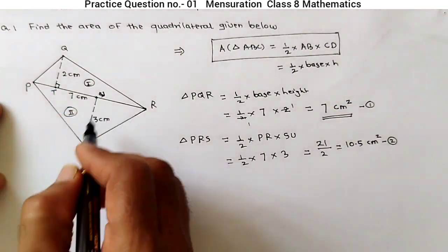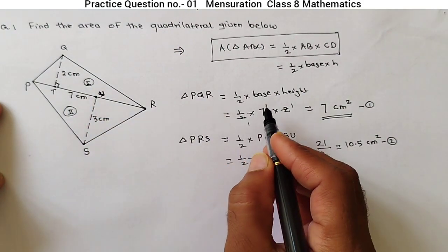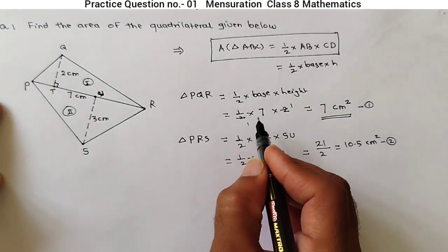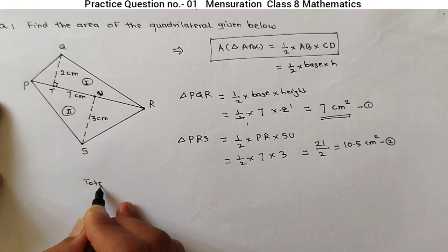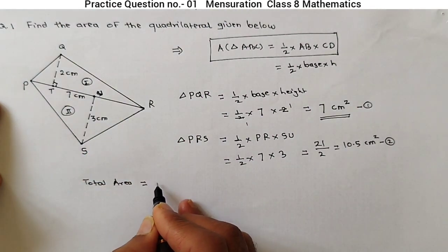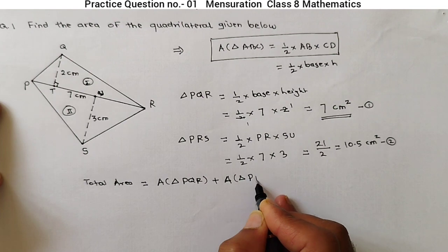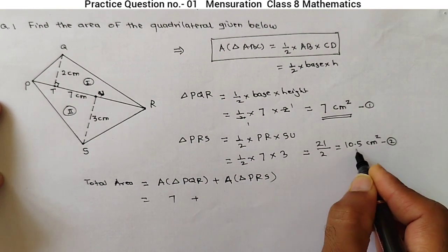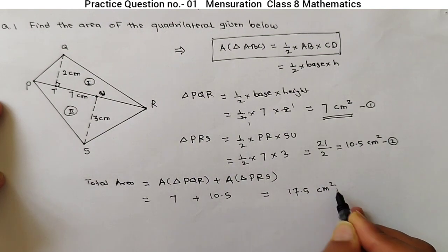This quadrilateral PQRS was divided into two sections — the first triangle and the second triangle. Total area equals area of triangle PQR plus area of triangle PRS. Area of PQR is 7 cm² and area of PRS is 10.5 cm², so the total area is 17.5 cm².